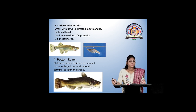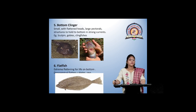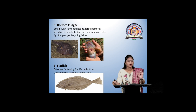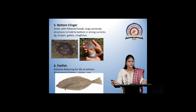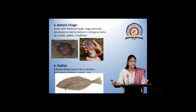The second is the bottom rover, in which the fish mouth is oriented in a downward direction and is surrounded by many barbels. Next is the bottom clinger. In the bottom clinger, a special organ is present, as seen in the diagram, by which the fish can cling to the surface. They have a flattened head and large pectoral structure. It is seen in the sculpin, gobies, and clingfishes. Next is the flatfish, in which the body is dorso-ventrally flattened, seen in skates and rays.